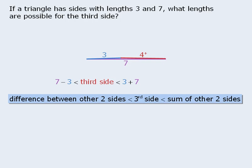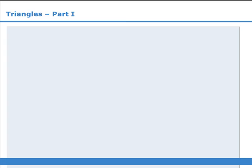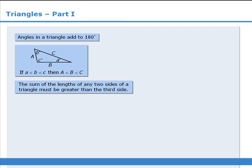Another way to write this is as follows. To summarize, in this lesson we learned that the angles in a triangle always add to 180 degrees. The lengths of the sides correspond to their opposite angles. The sum of the lengths of any two sides must be greater than the third side. And the length of the third side must be greater than the difference between the two given sides and less than the sum of the two sides.